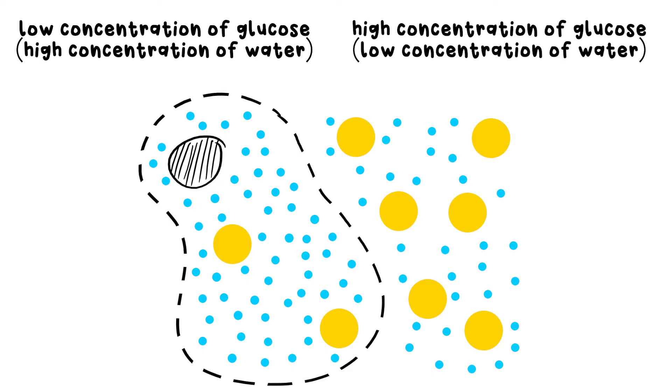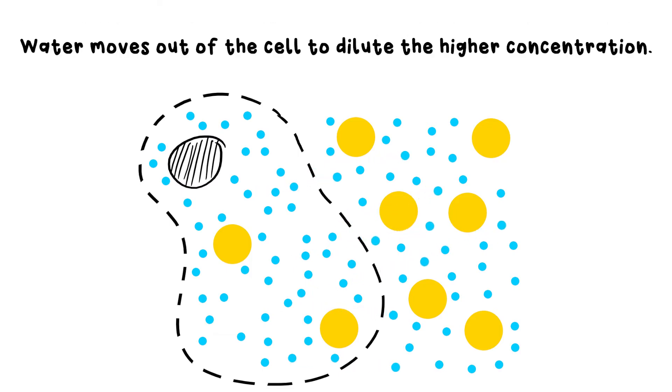The water moves instead. It moves out, diffuses out of the cell, to increase the amount of water outside, therefore reducing the glucose concentration to make it balanced with the inside.